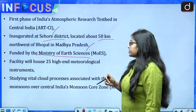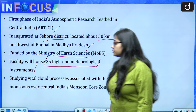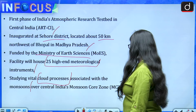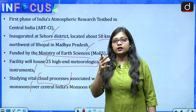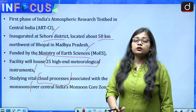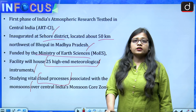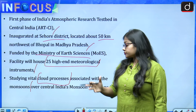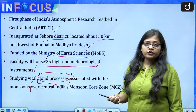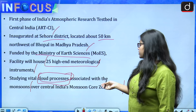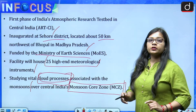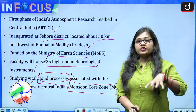This facility will house 25 high-end meteorological instruments. They will be studying vital cloud processes associated with the monsoons over central India's monsoon core zone — studying how rainfall comes, including southwest monsoon rainfall, and how more accurate predictions of rainfall can be made. The monsoon core zone refers to the period when monsoon is at its peak, that is the southwest monsoon season.